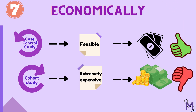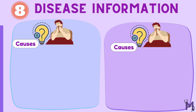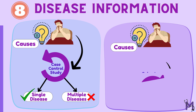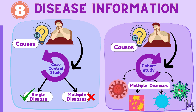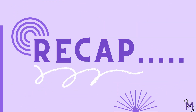Other than the disease selected for the study, a case-control study will not give information about other diseases. A cohort study, on the other hand, can give information on more than one disease.